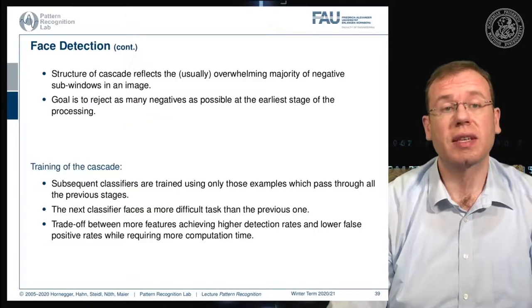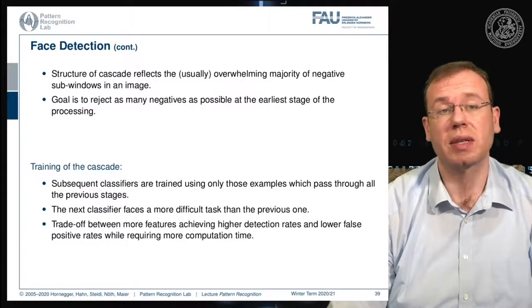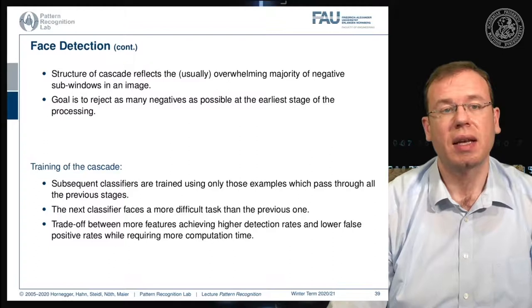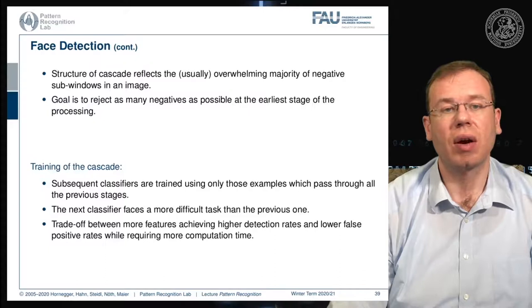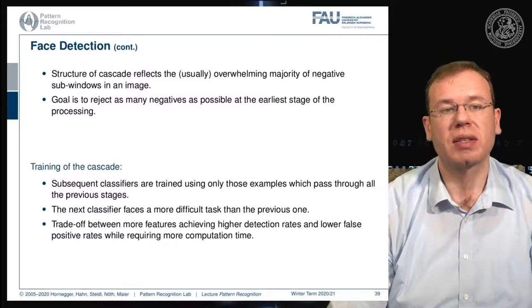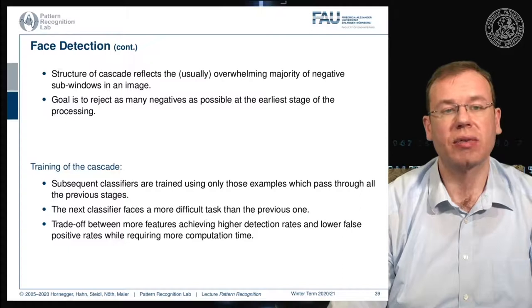The structure of the cascade reflects the overwhelming majority of negative sub-windows in an image, and the goal is to reject as many negatives as possible at the earliest stage. Training of the cascade uses only those samples which pass through all previous stages, so each subsequent classifier faces a more difficult task. There is a trade-off between more features achieving higher detection rates and lower false positive rates while requiring more computation time.